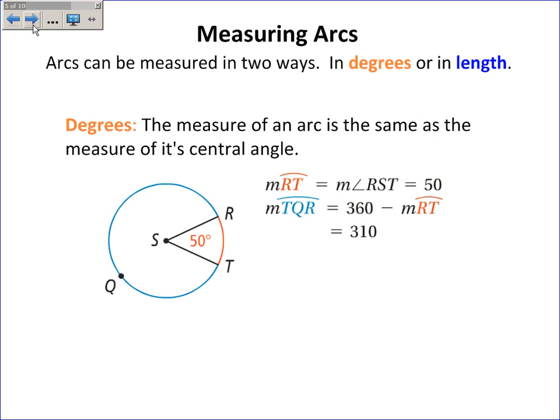Now, the measure of an arc in degrees is the same as the measure of the central angle. So if this central angle is 50 degrees, then arc RT has a measure of 50 degrees as well. It's always the same as the central angle. This angle over here is 360 minus 50, which is 310. And so this arc, the major arc over here, has a measure of 310.